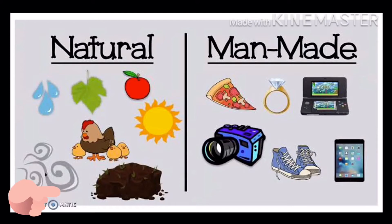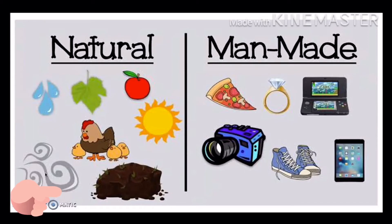Now look at the other side — these are man-made things. We have a pizza slice, a diamond ring, a video game console, camera, shoes and a mobile phone. These are not given by nature; they have been made by man, so they are known as man-made things. Let's see and get better clarity.